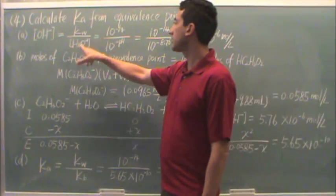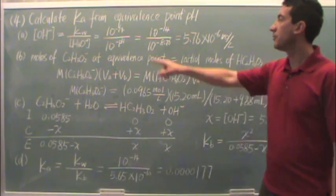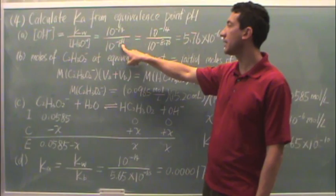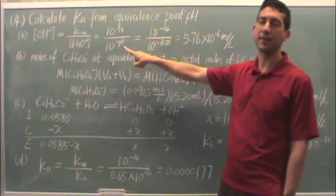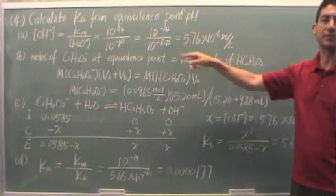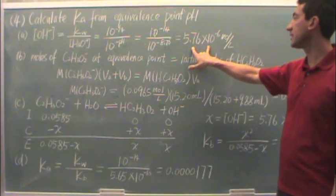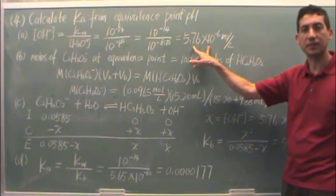So that's just Kw over H3O plus. We know Kw is 10 to the minus 14 and 10 to the minus pH. At the equivalence point we have that number, it was 8.76 for the data that we decided on. So that results in this hydroxide concentration.